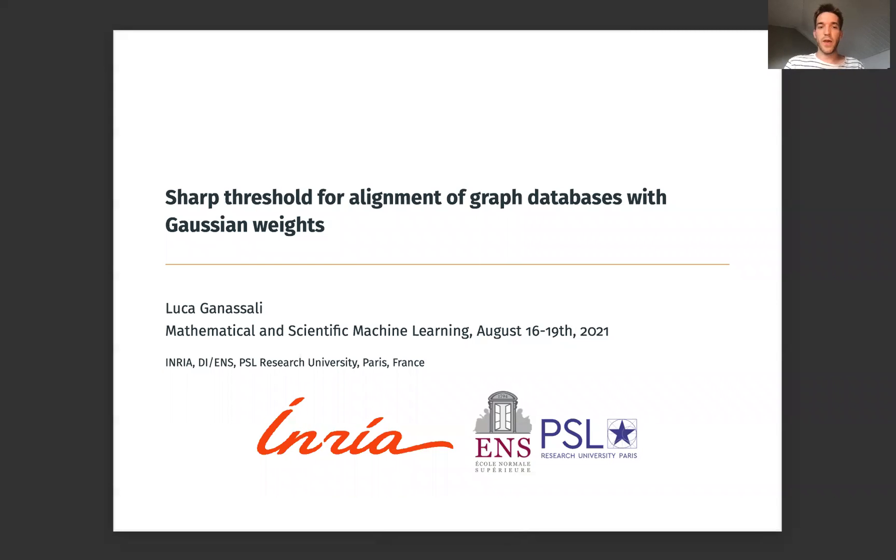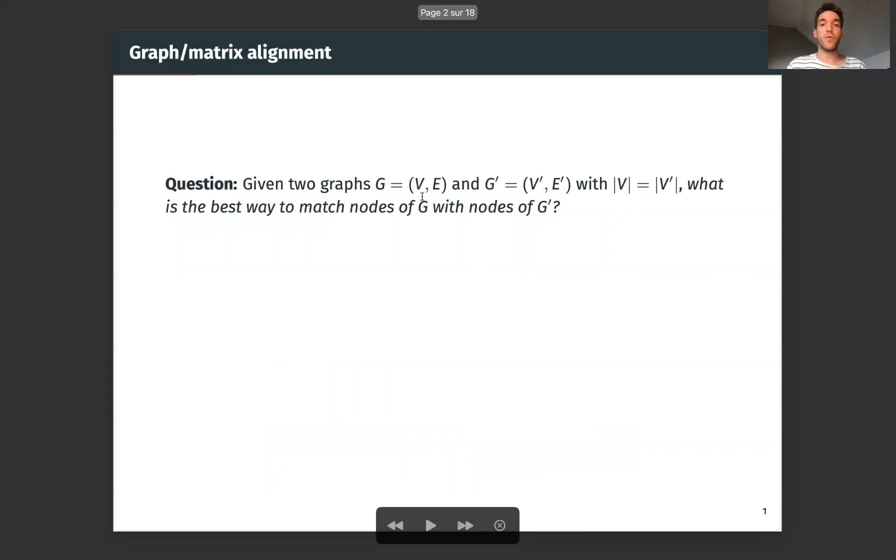Hi everyone, my name is Luca and I'm going to talk about the planted alignment problem for graphs or matrices with Gaussian weights. So first of all, what is graph or matrix alignment? Let's start with graphs. Assume that we are given two graphs G and G' with the same number of nodes and we ask the following question: